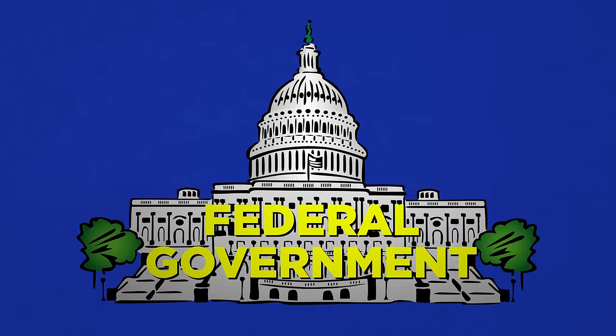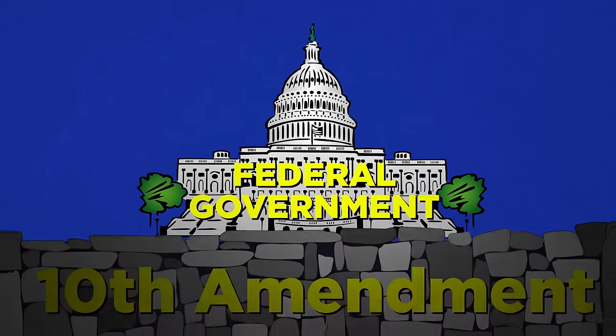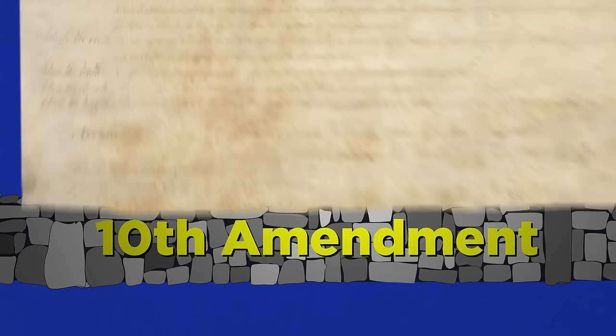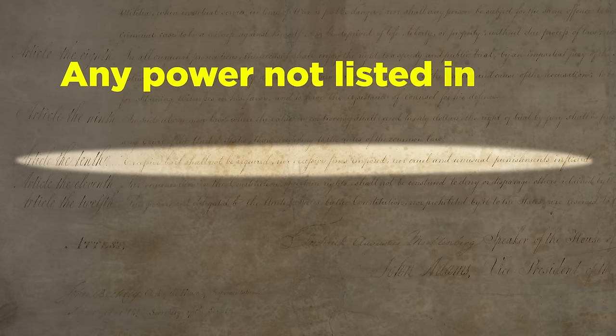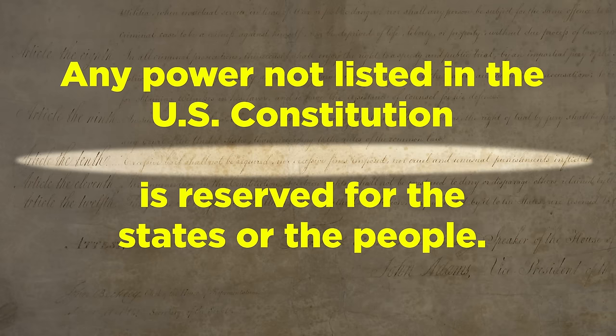Although the federal government may pass laws that apply to all states, cities, and people, its power is limited by the U.S. Constitution. In fact, the 10th Amendment, the last entry in the Bill of Rights, was created in order to restrict the range of power exercised by the federal government. The 10th Amendment states that any power not listed in the U.S. Constitution is reserved for the states or the people.